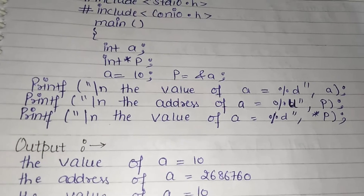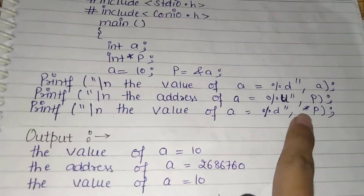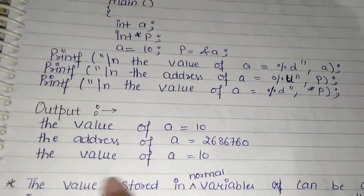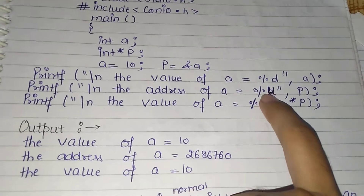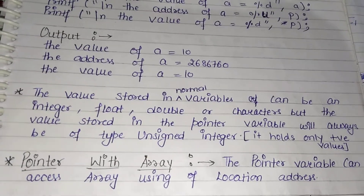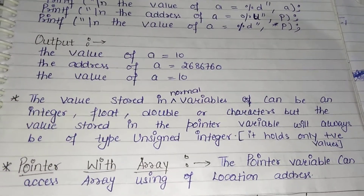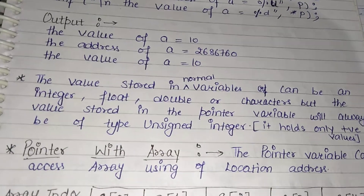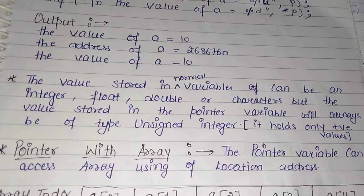Next, we have to print the value of a through the pointer. The value stored in a normal variable can be integer, float, double, or character. But the value of a pointer variable will always be an unsigned integer, meaning it will always be a positive value, because addresses are always positive.